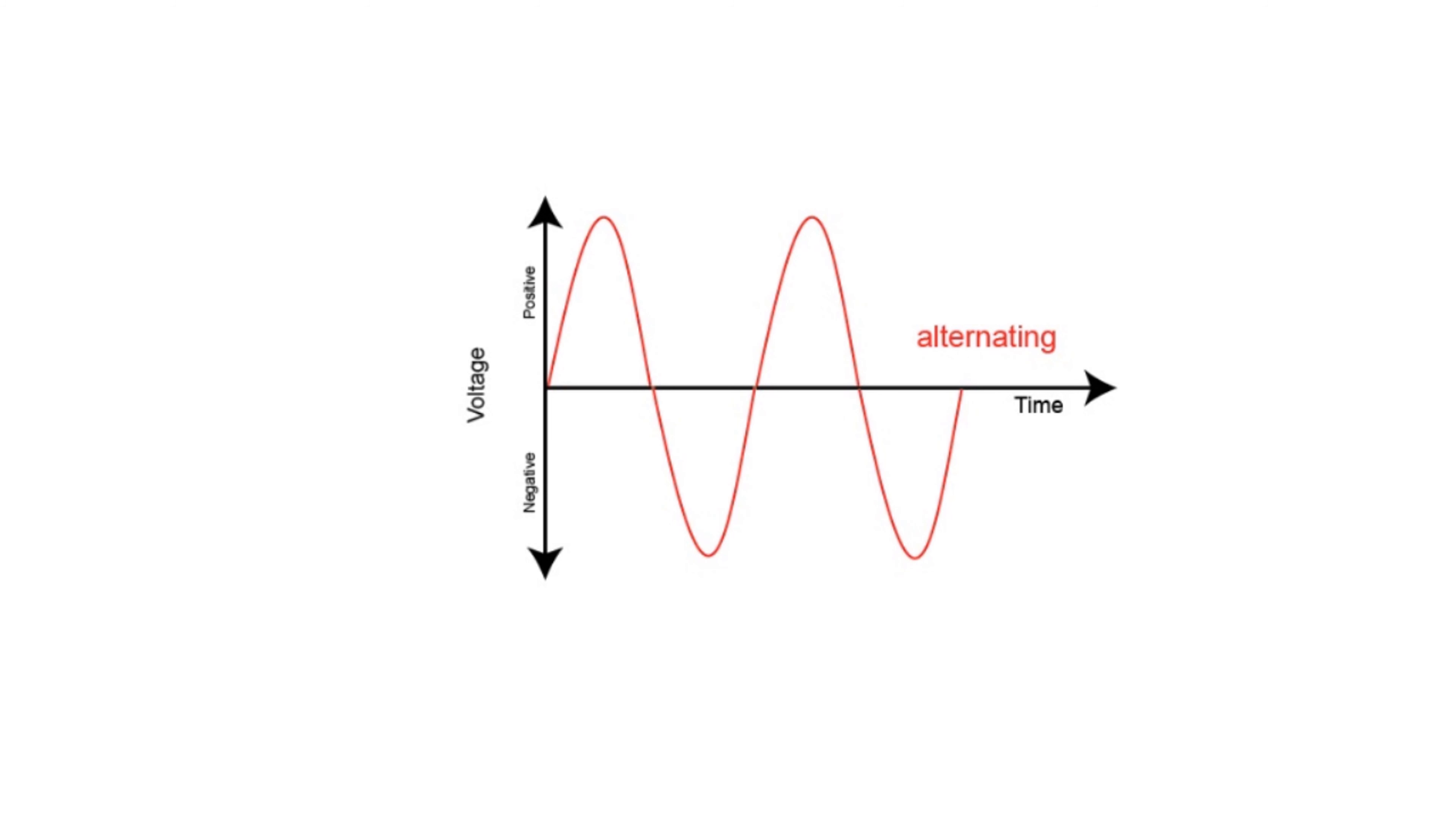Here we have considered a voltage waveform that is varying with respect to time. From this particular alternating quantity we can define certain things. The first one is a cycle.